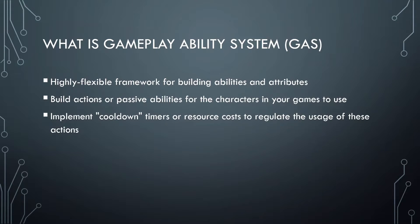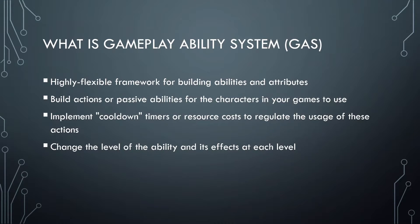You can also implement cooldown and cost functions. For example, an ability can be cast after X amount of time, or a cost system where the ability requires Y amount of mana on the character before it can be activated. The system also supports changing the level of the ability and its effect at each level — for example, an ability might have a cooldown of 2 seconds at level 1 and 0.5 seconds at level 5.